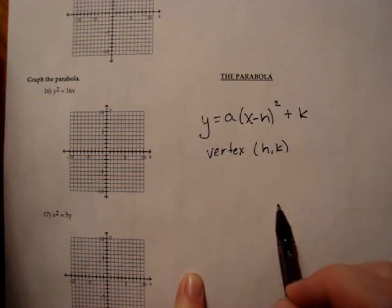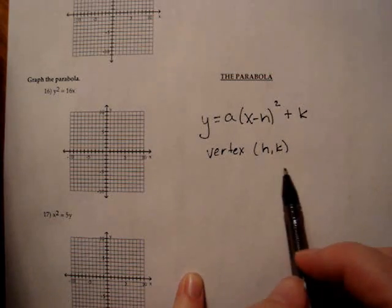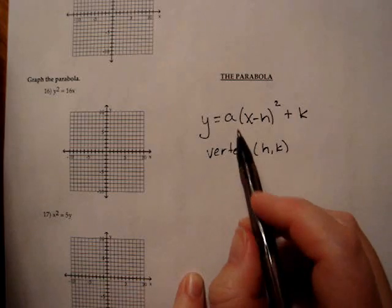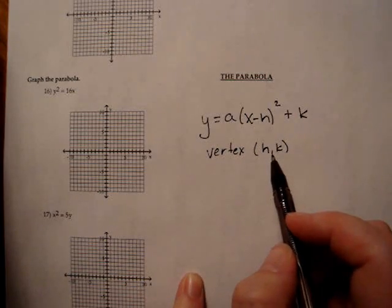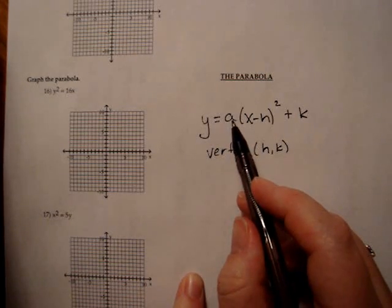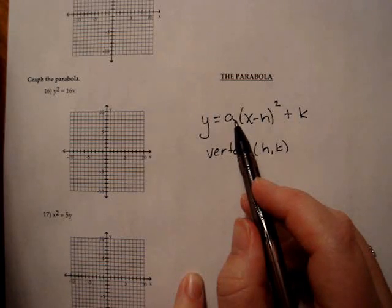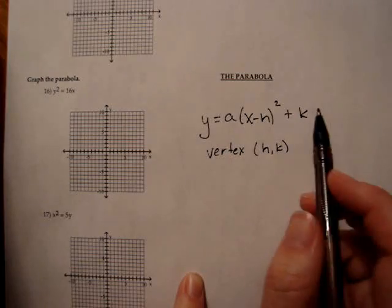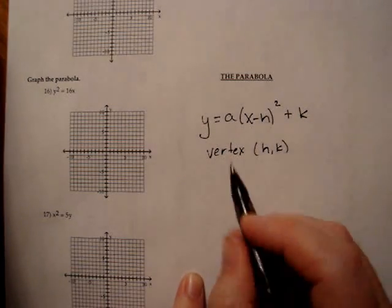And that's basically as far as we got before. What we want to do now is not only plot the vertex and realize which direction my parabola opens, but we're also going to have to pick a couple more points to get the shape of our parabola correct. So that's familiar.